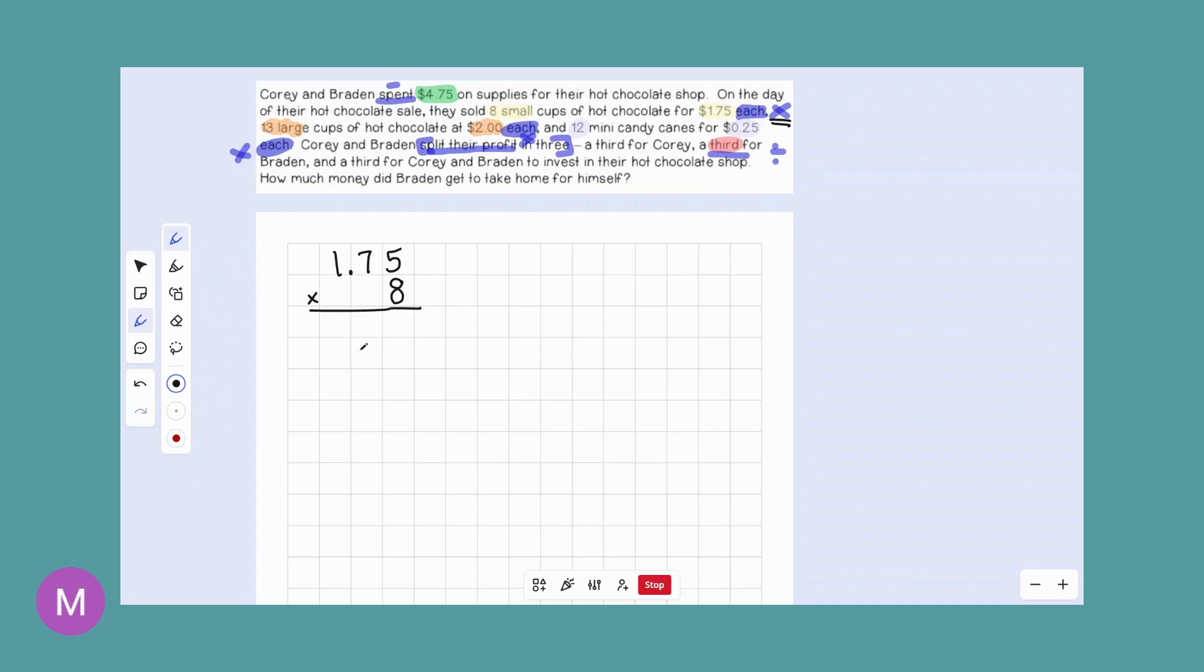So eight times five, 40. Eight times seven, 56 plus four, 60. Eight times one, eight plus six, 14. So we have two decimal places in the top number and no decimal places in the second. So we're going to move in two from our answer and we earned $14 so far just from the small cups of hot chocolate.